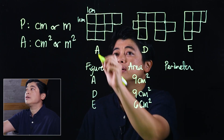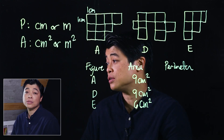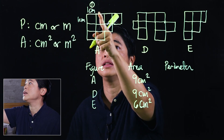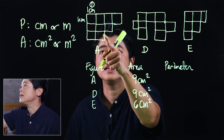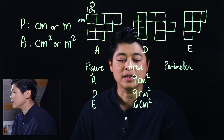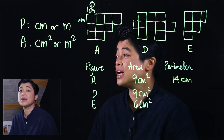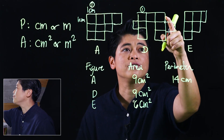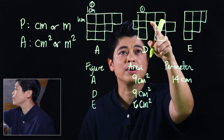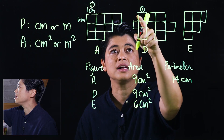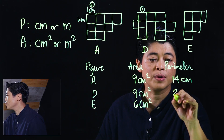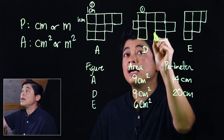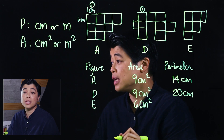There are times that kids will over-count, so what's best is to maybe write a number one where you started. Counting around figure A gives us 14 centimeters. Counting around figure D gives us 20 centimeters. Mark where you started counting so you don't over-count.